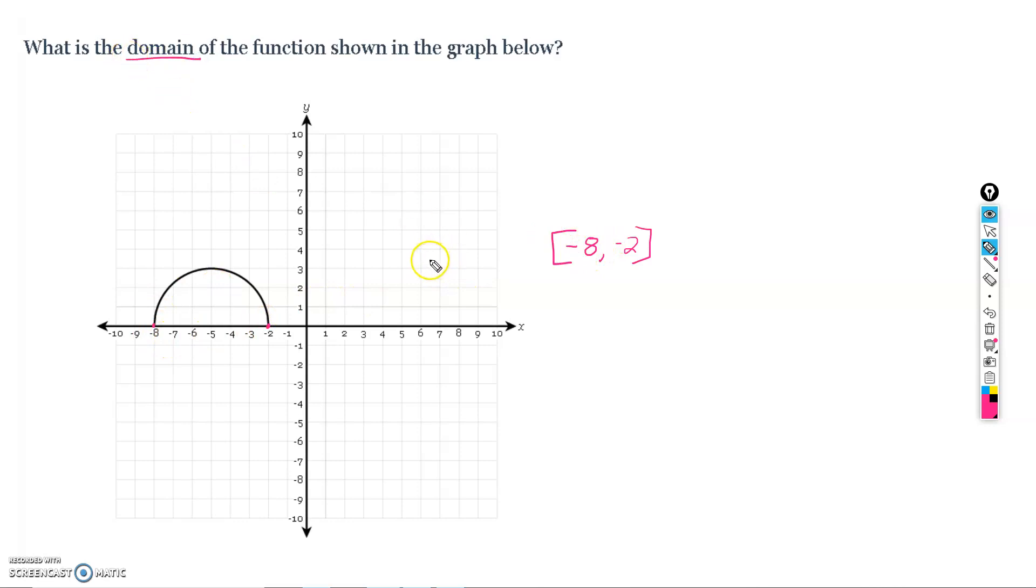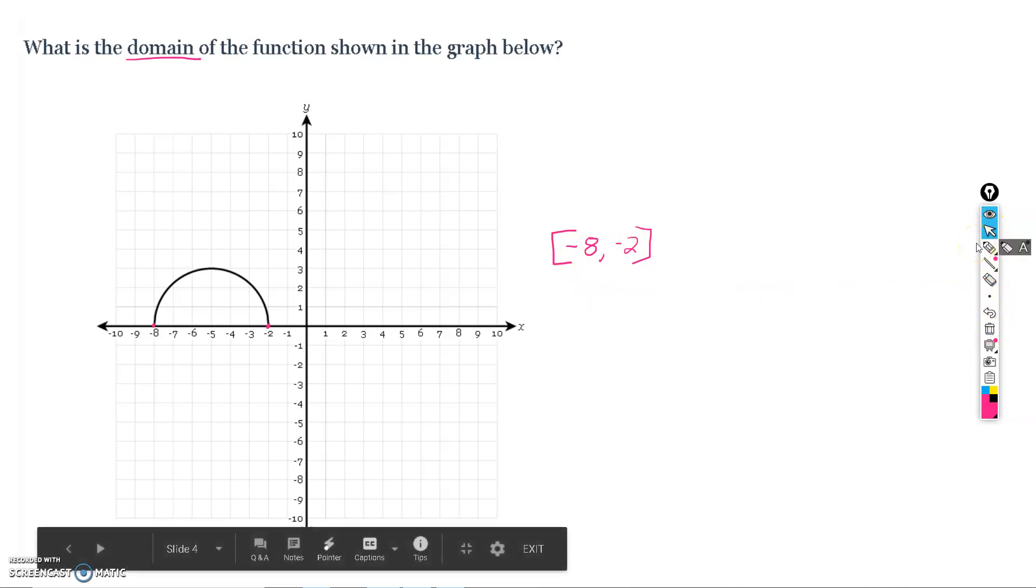So, again, domain, think, how far left does my function go? How far right does my function go? And then, if there's any problems in the middle of the function, make sure to use those unions and just do not include those particular points. All right. Hope to help. Again, as always, ask questions as needed.